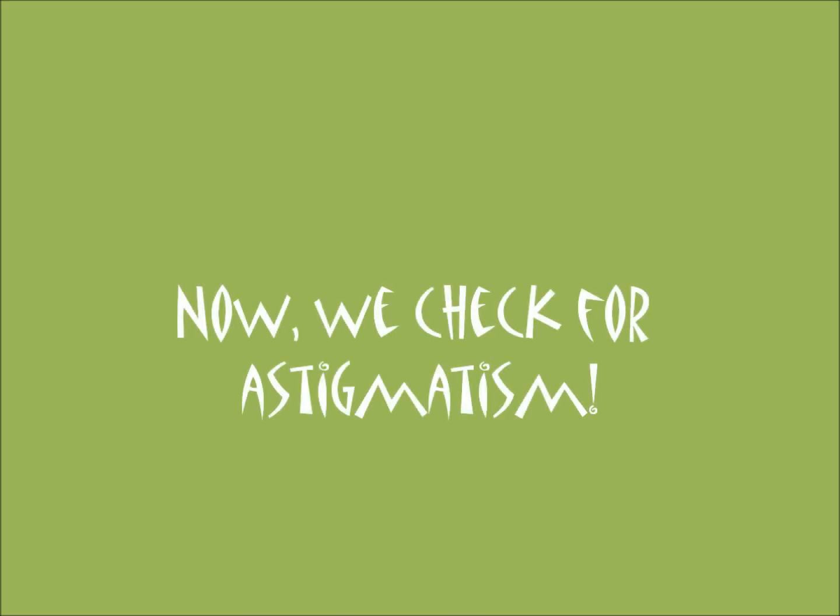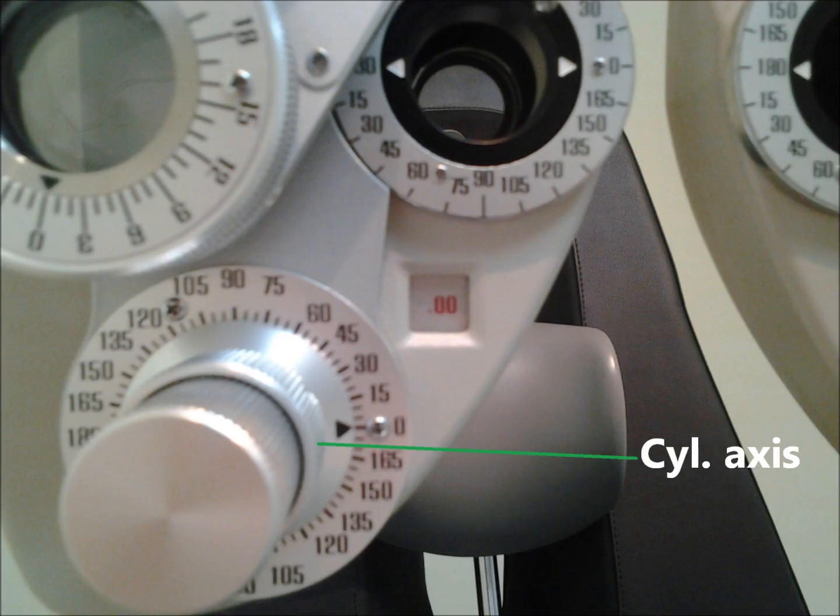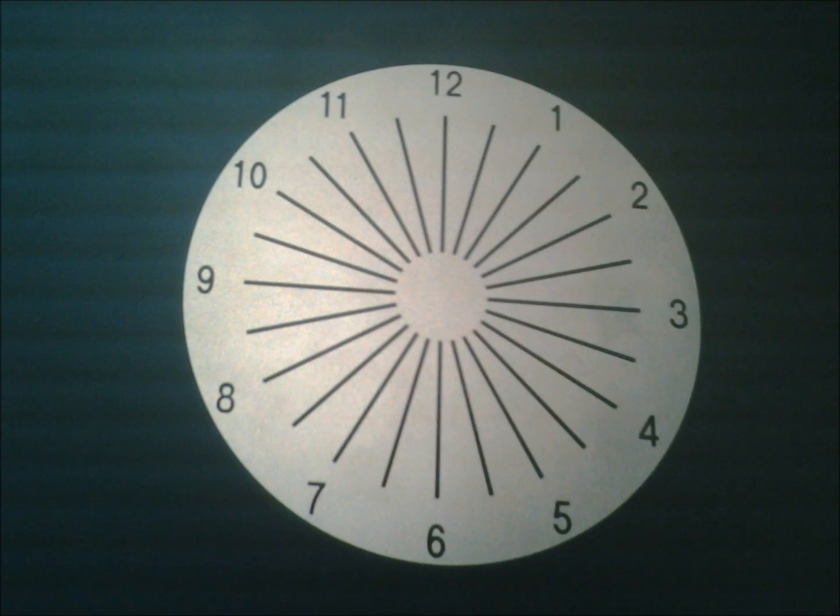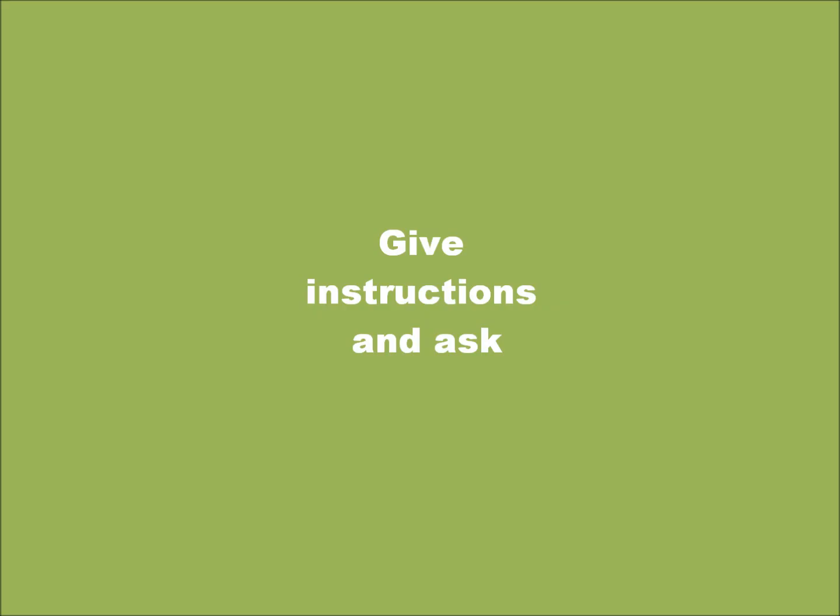Now we can check for astigmatism. You're going to focus on the lower knobs of the phoropter. That knob is for the axis, which you will begin with. Set up the target. In this case, since we're doing everything from scratch, it's going to be the clock dial.